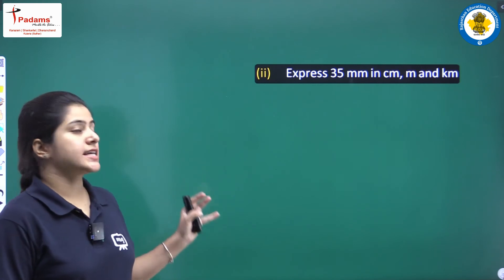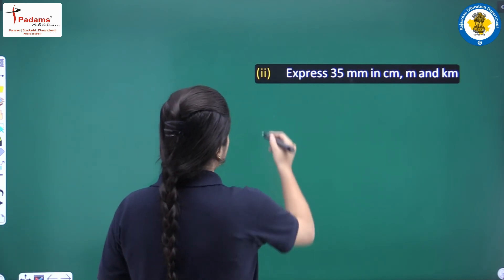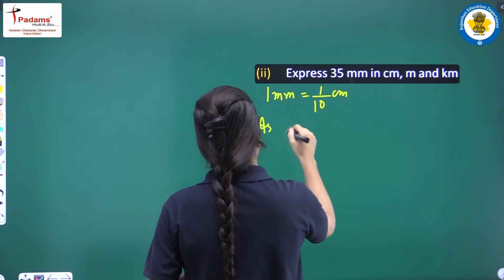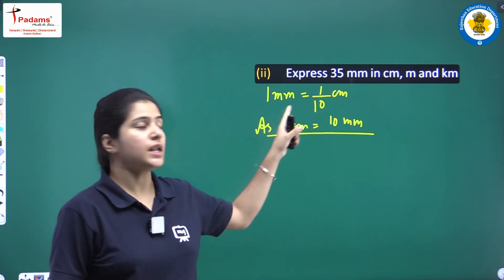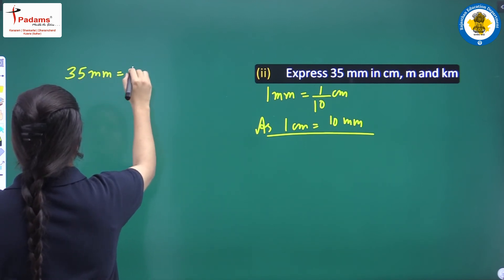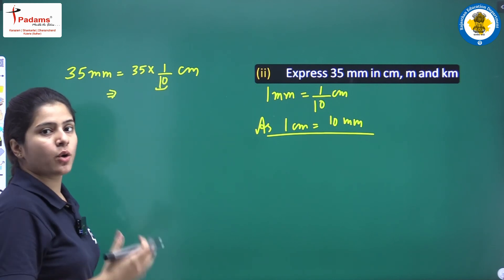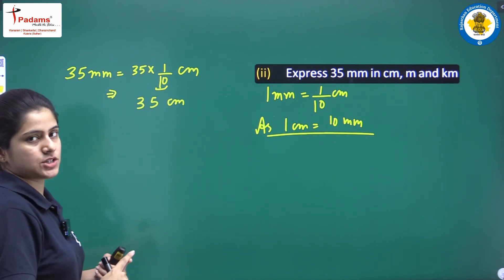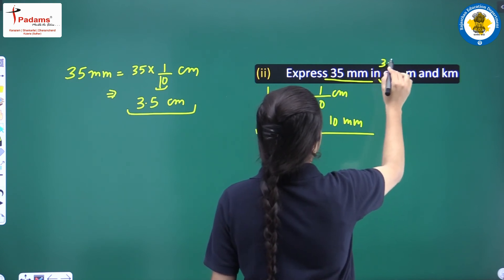Next: express 35 millimeters in centimeters, meters, and kilometers. We know 1 centimeter equals 10 millimeters, so 1 millimeter equals 1 upon 10 centimeters. For 35 millimeters: 35 into 1 upon 10. There is 1 zero at the denominator, so place the decimal before one digit. The answer is 3.5 centimeters.